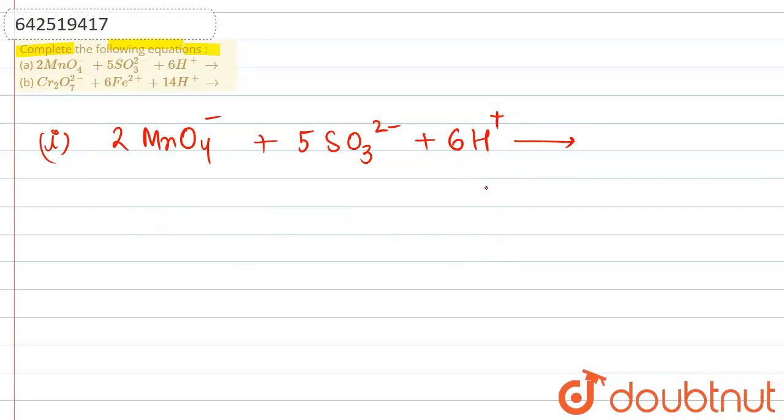So the net charge on the left hand side of the equation is -6. So it means that we also have to, sorry, -4 basically. So we have to make sure that on the right side we have +4 charge. So in this reaction what will happen,